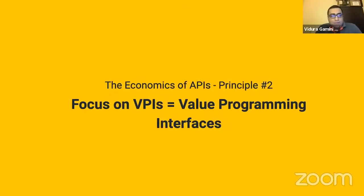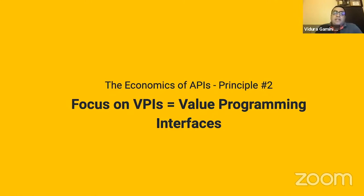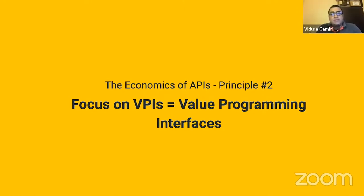That brings us to Principle Number Two: focus on value programming interfaces. Each of the products we've discussed — be it a physical product, an application, or a service — delivers some sort of value to end users. That's what makes consumers use it, pay for it, and sometimes even become fans of that service or brand name. What really enables the delivery of this value are the APIs associated with the product.